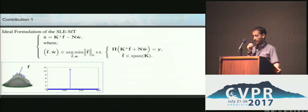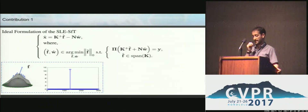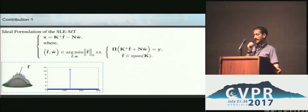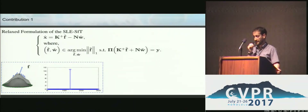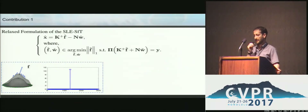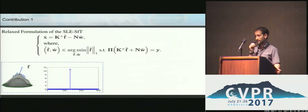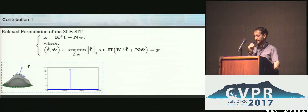In our contribution, we replace the L2,1 norm by L0 minimization, subject to the projection constraint and the fact that the force must lie on the span of K. Since L0 minimization is NP-hard, we relax this problem by minimizing the L2,1 norm of the force and dropping the constraint over the span of K.